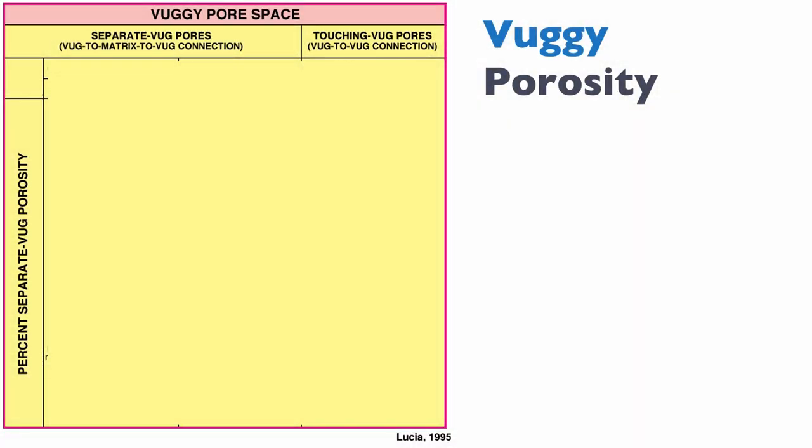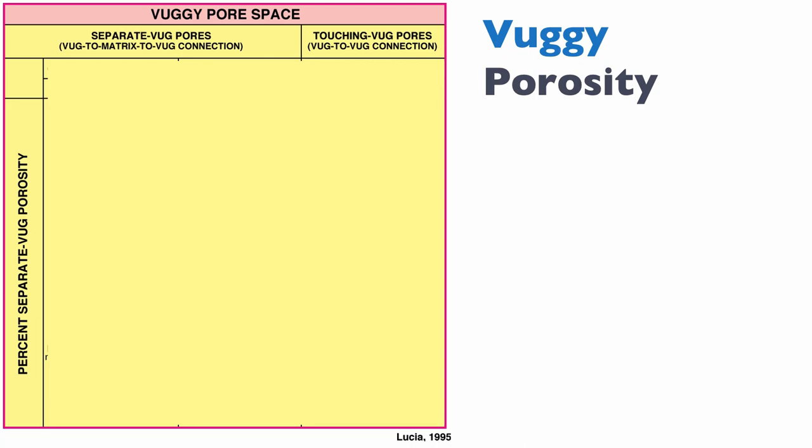Regarding vuggy porosity in the Lucia classification, the VOGS need to be determined separately. Lucia recognizes two very different types of VOG: separate vug pores, which require any fluid to flow through the matrix — a big constraint on flow — and VOGS that are effectively touching, where fluid can go from one vug to the next without flowing through the matrix.